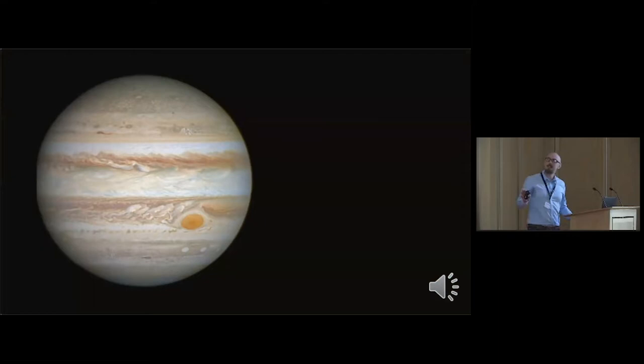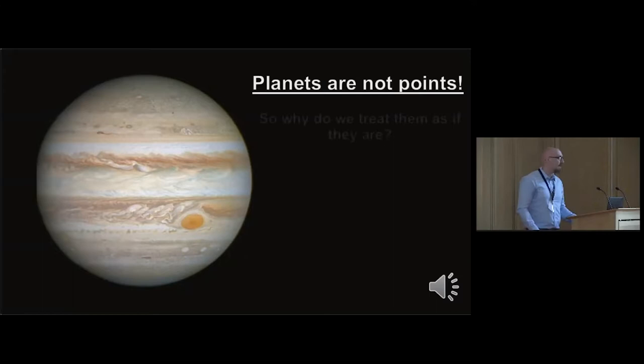I want to start off with a nice picture of Jupiter, although not quite as nice as some of the ones we saw this morning - those were really brilliant. The reason I'm starting here is because Jupiter is a dynamic, interesting, and very variable object across the whole of the disk, with different independent cloud formations and dynamics. The point I'm trying to make is that planets are not points - so why do we treat them in exoplanets as if they are?